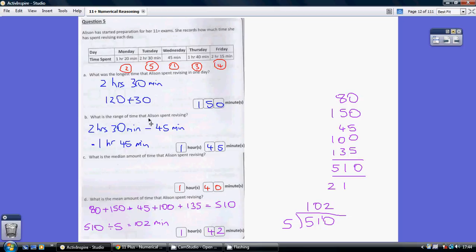What is the range of time that Alison spent revising? Well, range is biggest take away smallest. So the longest time was 2 hours 30 minutes, the smallest time was 45 minutes, so we're taking one away from the other. 2 hours 30 minutes take away 45 minutes: well, 30 minutes takes us back to 2 hours, we need to take away another 15 minutes, so 1 hour 45 minutes.